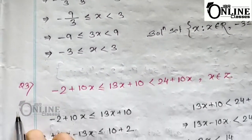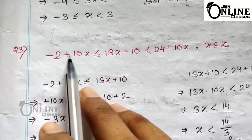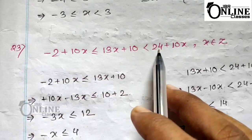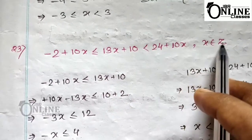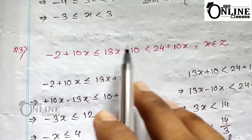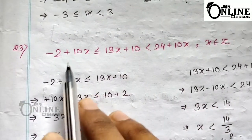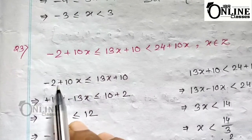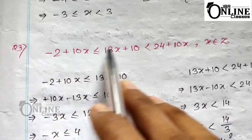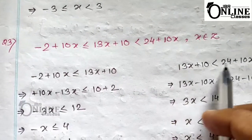Sum number 23: the given inequation is −2 + 10x ≤ 13x + 10 < 24 + 10x, where x ∈ Z. For this kind of inequation you have to separate it into two parts. The first part is −2 + 10x ≤ 13x + 10, and the second part is 13x + 10 < 24 + 10x.